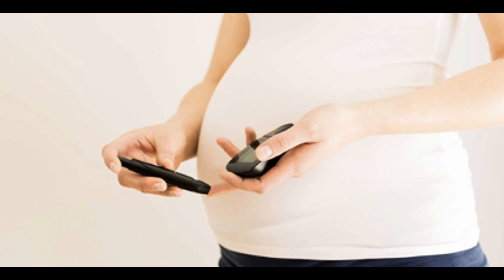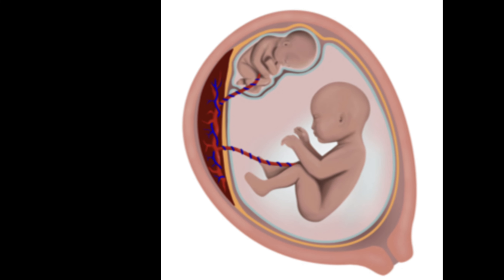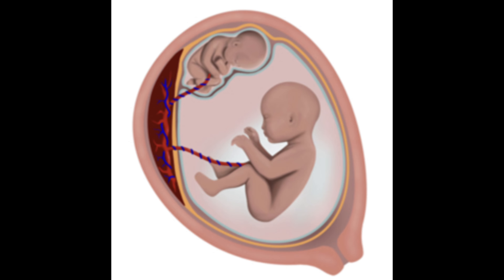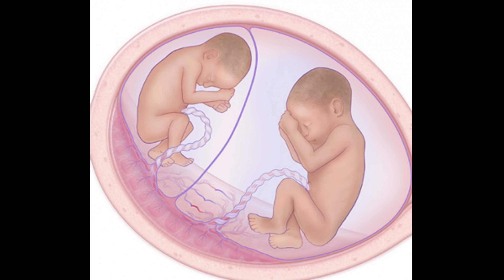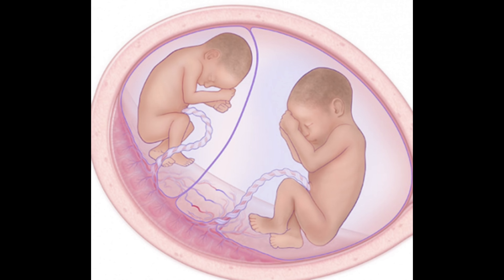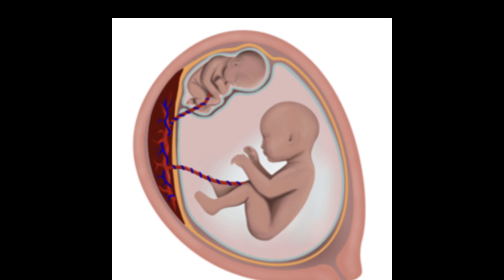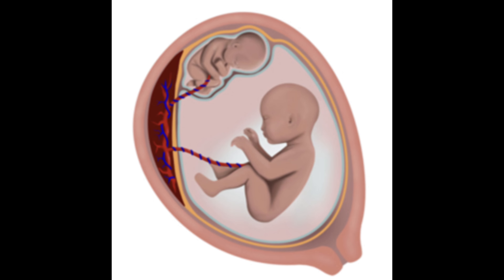Another more serious complication is twin-to-twin transfusion syndrome, which occurs in about 10% of all twins. This occurs when identical twins share a common placenta, as in monochorionic twins. A connection between the babies' blood vessels allows one baby to receive too little blood and the other too much, so one baby is weak with IUGR and the other has excessive weight. Severe cases can cause loss of one baby, and in extreme cases, both babies.